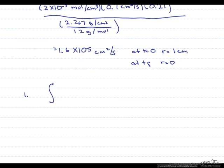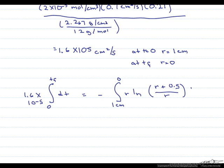So let's put this into our integral. So we have 1.6 times 10 to the minus 5, 0 to t_final dt equals negative from 1 centimeter to 0 r, ln of r plus 0.5 divided by r dr.